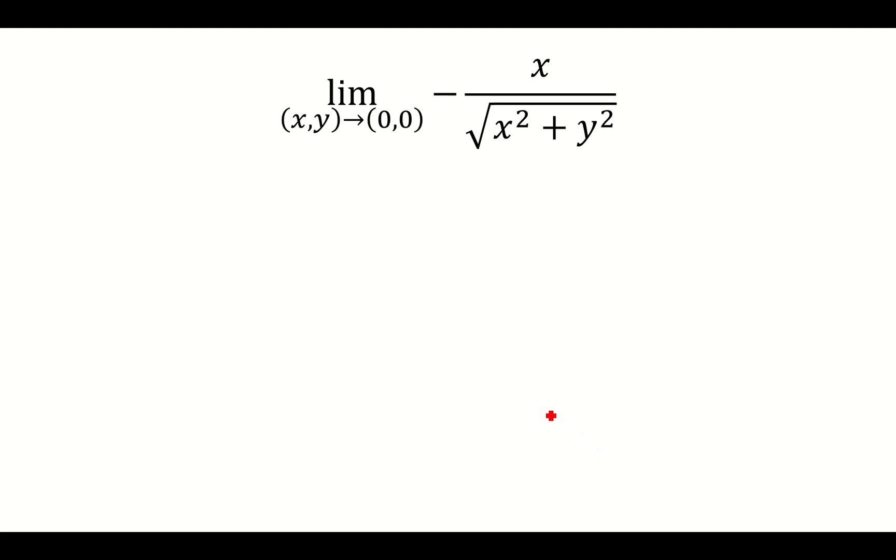And in general, whenever you take the square root of x squared, that's just going to equal absolute value of x. But we know the absolute value of x is defined to be x if x is greater than or equal to 0, and negative x if x is less than 0.